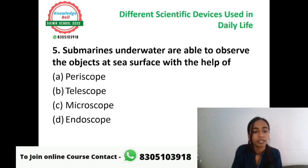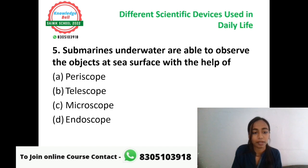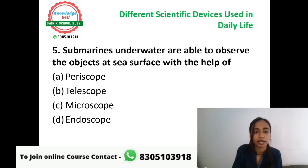Question number five: submarines underwater are able to observe objects at the sea surface with the help of — A: periscope, B: telescope, C: microscope, or D: endoscope.